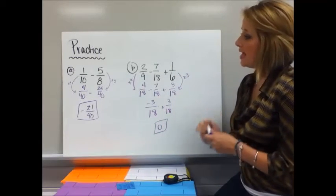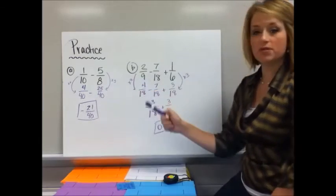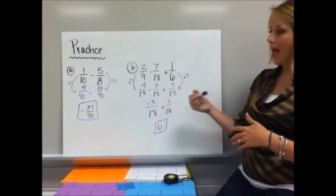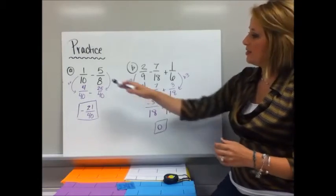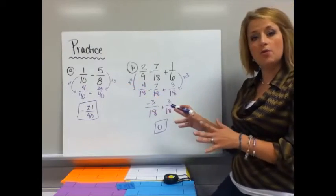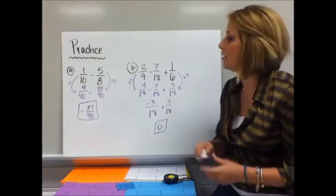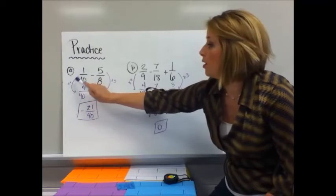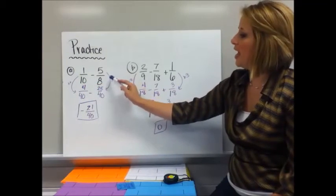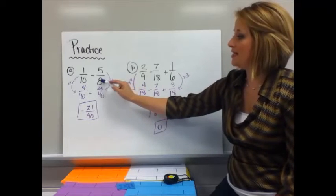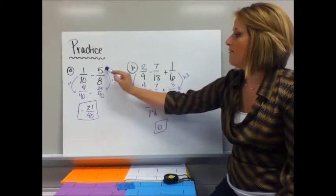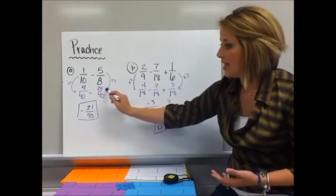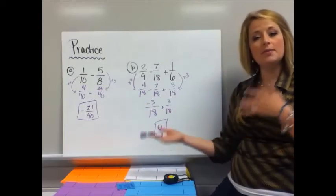Let's compare. On practice A, the common denominator that I found was 40. These are written horizontally, and as I said in the last slide, you can definitely add or subtract them horizontally, and this is kind of the way that I do that. But some of you may want to rewrite the numbers by stacking them, and that's completely fine. To go from 10 to 40, I multiplied by 4. 1 times 4 is 4. For 5/8, I have to multiply by 5 because 8 times 5 is 40. 5 times 5 is 25.